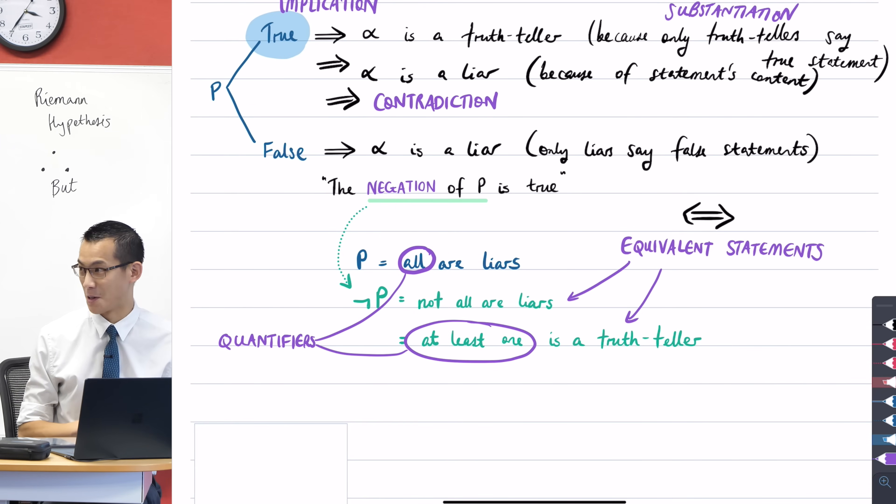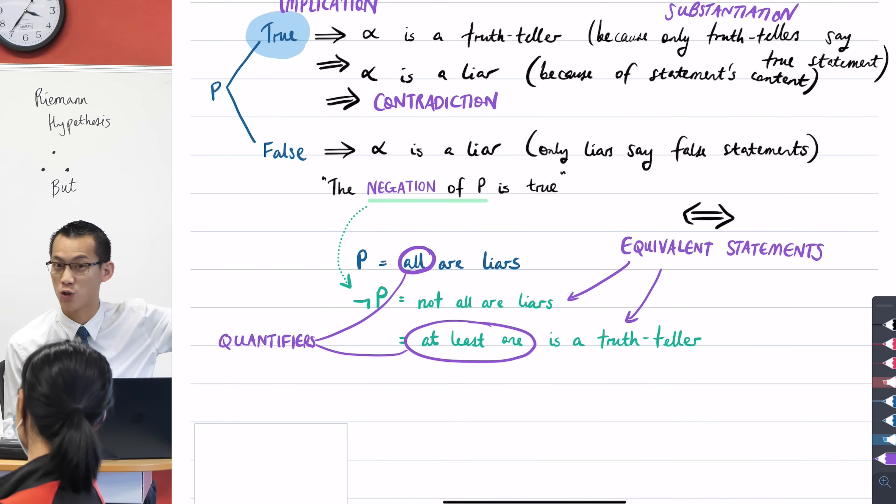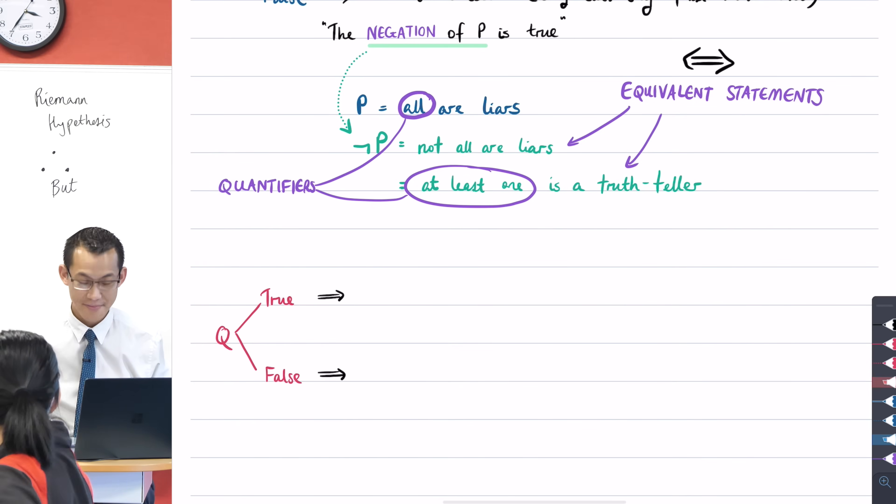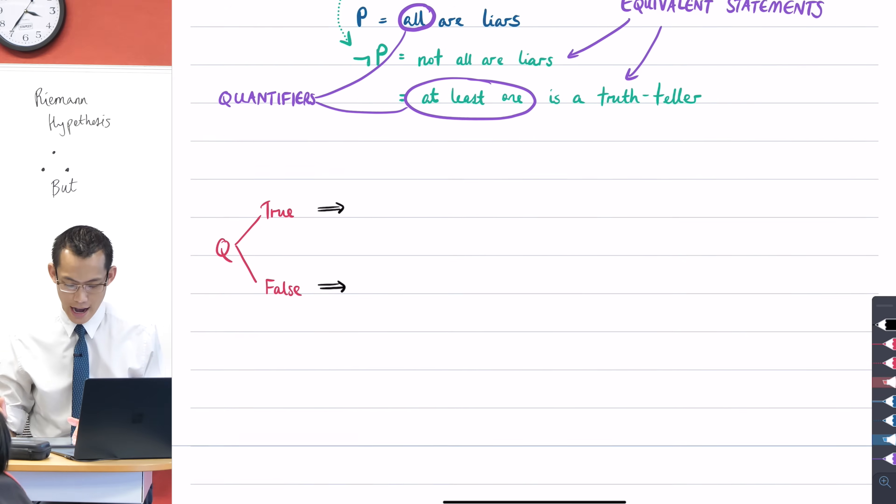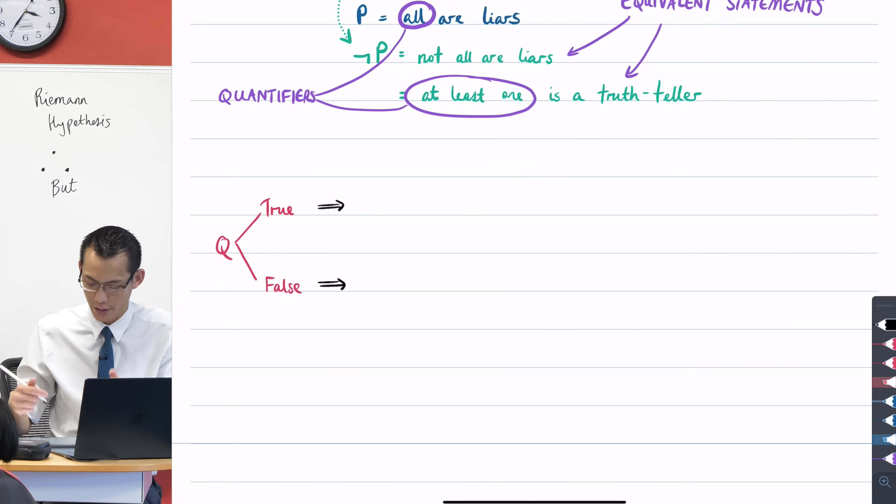All right. So this is really good. We've got some logic that's established. Like I know some of you were kind of stumbling over this and you didn't know how to articulate how you knew that the first person was a liar, alpha was a liar. But this is how we construct a proof for it. Let's have a look at the next statement, shall we? That's statement Q. So what I'm going to do is think about, like I did for statement P, what happens if they're true? What happens if they're false?